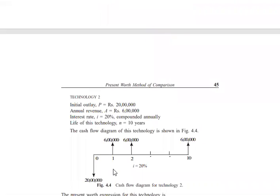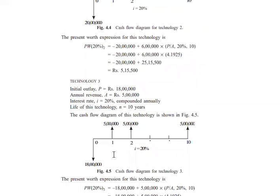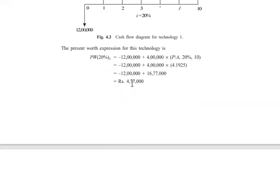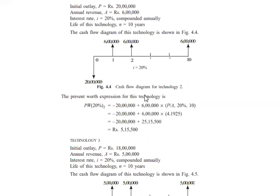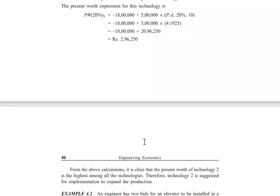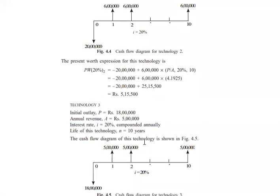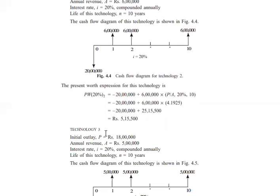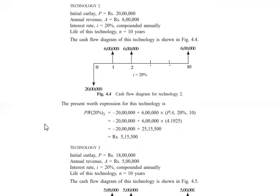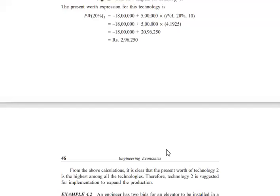Computing the present worth for all three technologies: Technology 1 gives Rs. 4,77,000; Technology 2 gives Rs. 5,15,500; and Technology 3 gives Rs. 2,96,250. The highest present worth value is obtained by Technology 2, with Rs. 5,15,500.